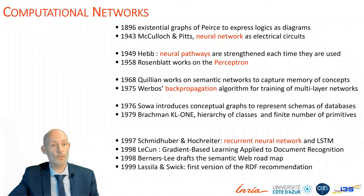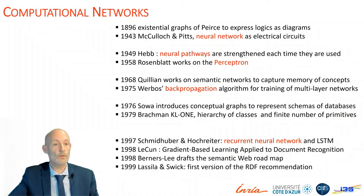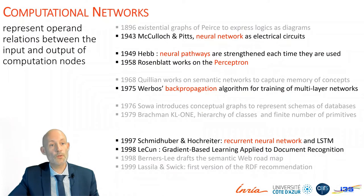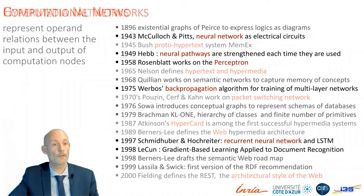The second type of networks I wanted to mention is computational networks. Here I mentioned the early work of McCulloch and Pitts on electrical circuits representing neural networks, then the perceptron of Rosenblatt, and the propagation algorithm, and more recently recurrent neuronal networks. Computational networks are networks that represent operand relations between the input and output of computation nodes, and in particular signal pathways between artificial neural neurons.